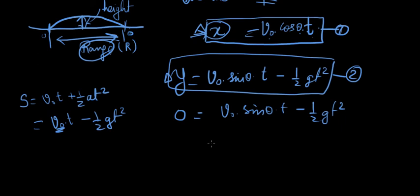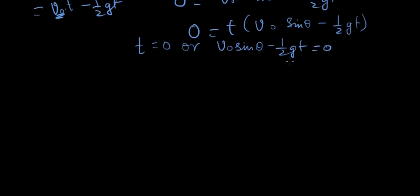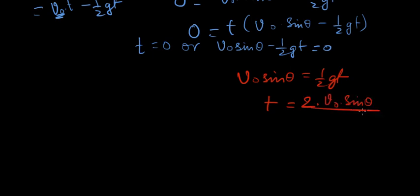V naught sine of theta times t minus half g t squared. So can you factor t out from here? I think we can. t times v naught sine theta minus half g t. This is zero. So t equals zero or v naught sine of theta minus half g t equals zero. So if we solve for this, what do we get? V naught sine theta equals half g t. So t equals 2 times v naught sine theta over g.